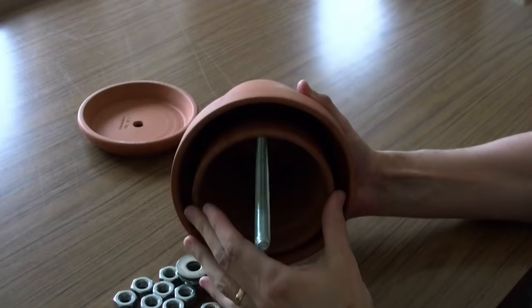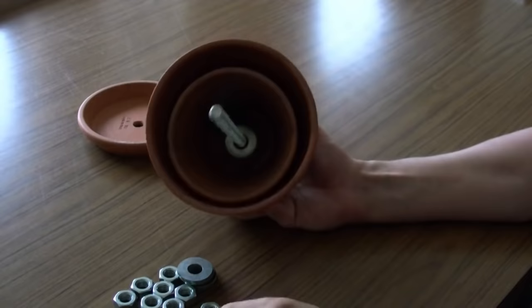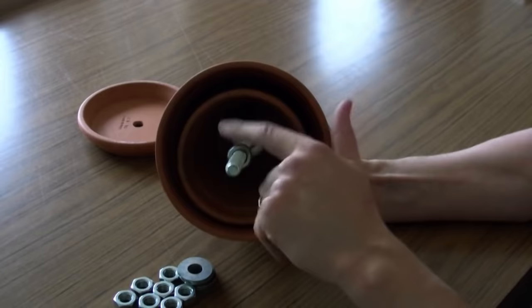Then put another washer, followed by two more nuts. Once again, the reason for putting an additional nut on is to create a tight lock on this side as well.